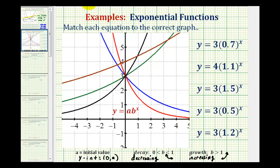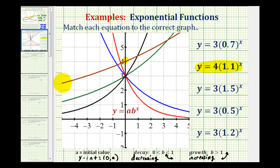Let's take a look at our equations again and first focus on the value of a, or the initial value. Notice all these functions have an initial value of three, except one function where a is equal to four. That graph would have a y-intercept of positive four, and because b is greater than one, it would also be exponential growth. Looking at our graphs, there's only one function with a y-intercept of positive four that's also going uphill — so the second equation produces the brown graph.